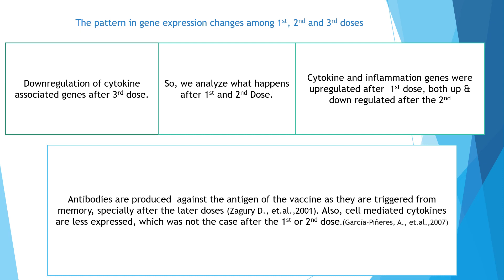We saw down-regulation of cytokine-associated genes after the third dose, so we analyzed what happens after the first and second doses. Cytokine and inflammation genes are up-regulated after the first dose and both up- and down-regulated after the second. Antibodies are produced against the antigen of the vaccine as they are triggered from memory, especially after later doses. Cell-mediated cytokine expression is less after the third dose, which was not the case after the first or second. This is one more reason why the third vaccination is so crucial, as cytokine overexpression is considered a driving force of malaria-related death. The characterization of cytokine and chemokine patterns could contribute to identifying biomarkers of vaccine response.